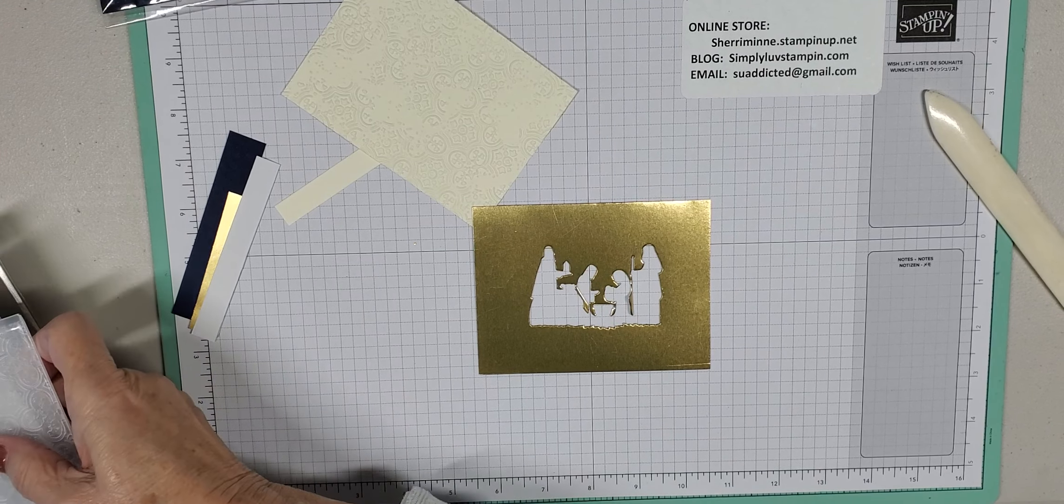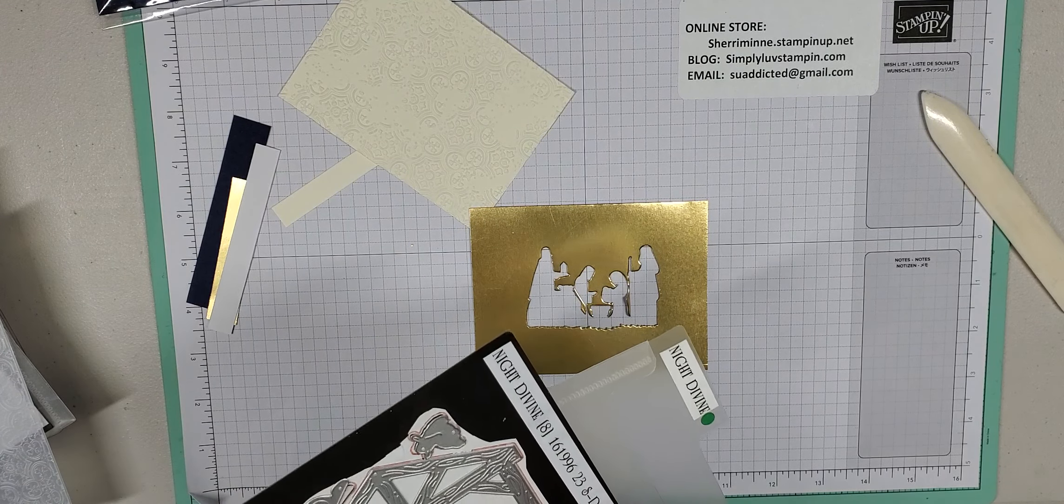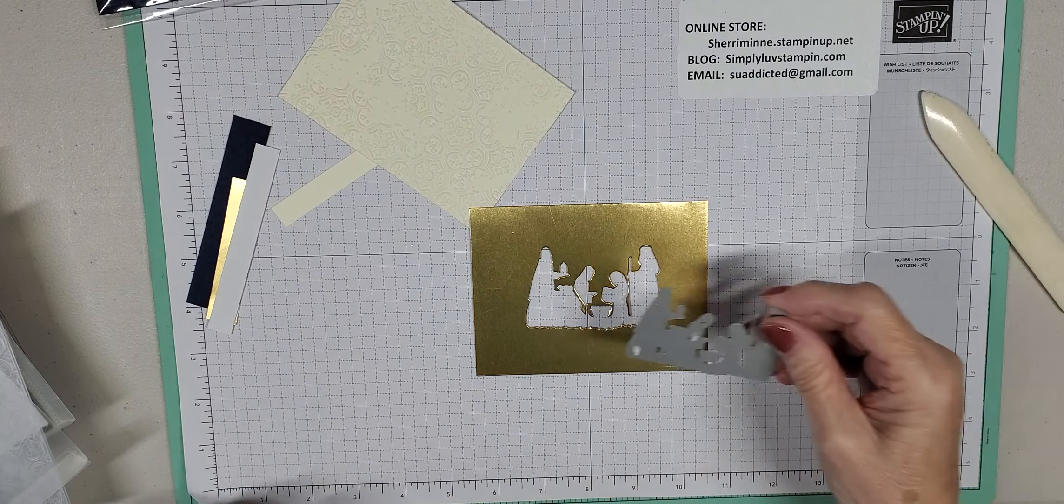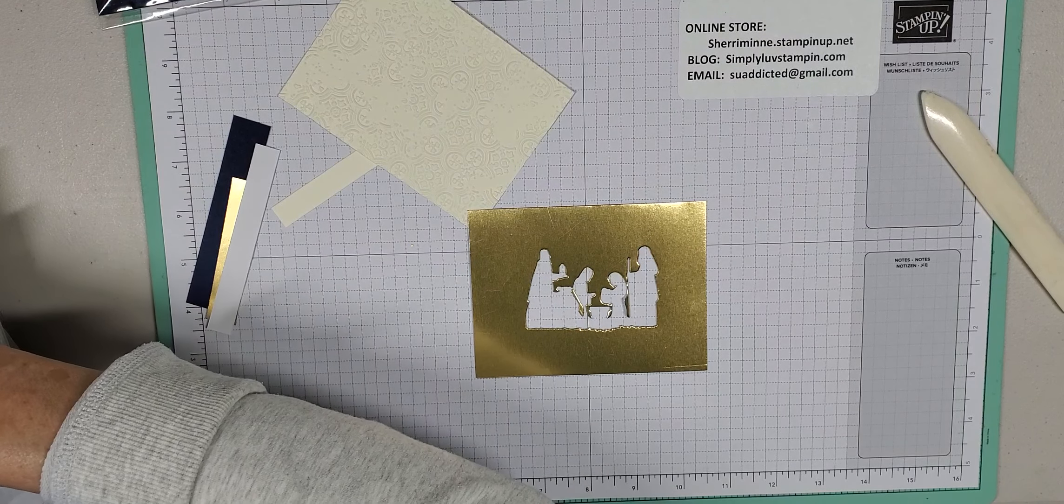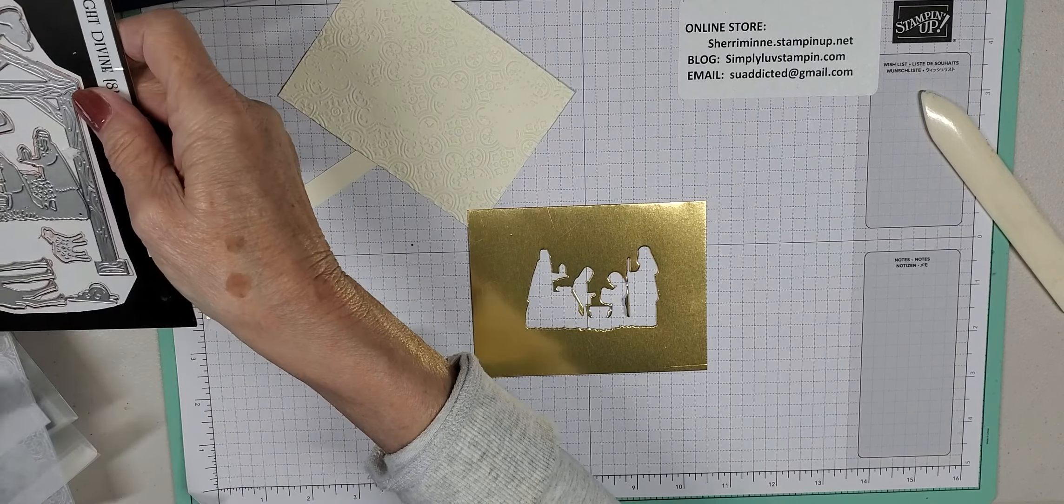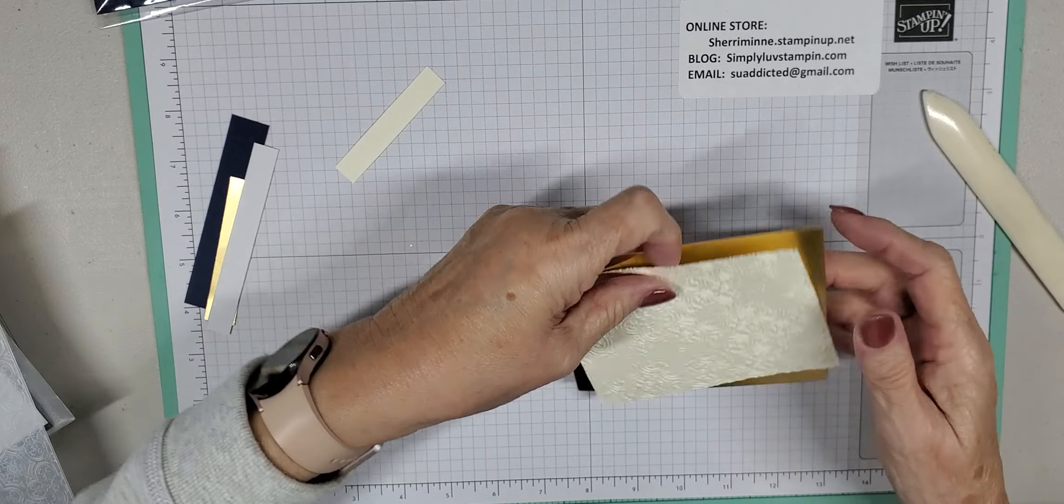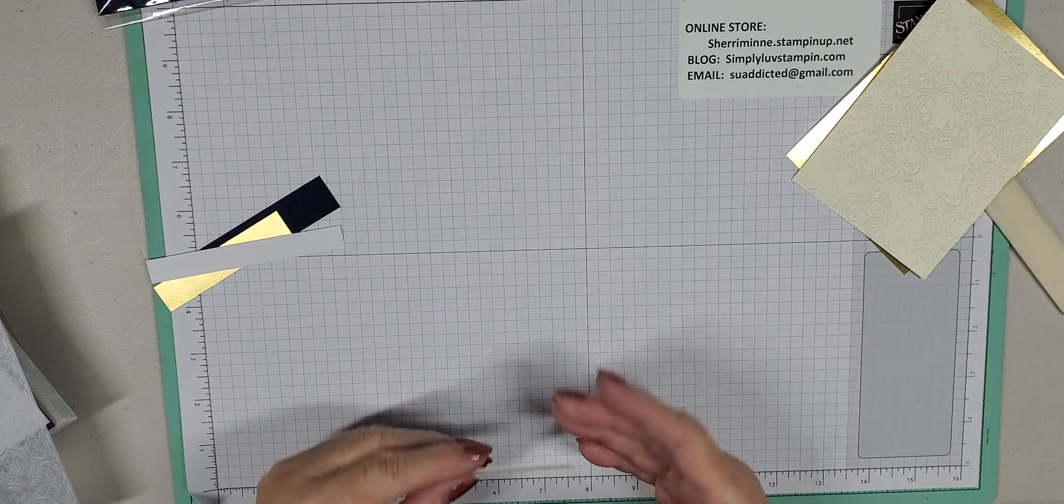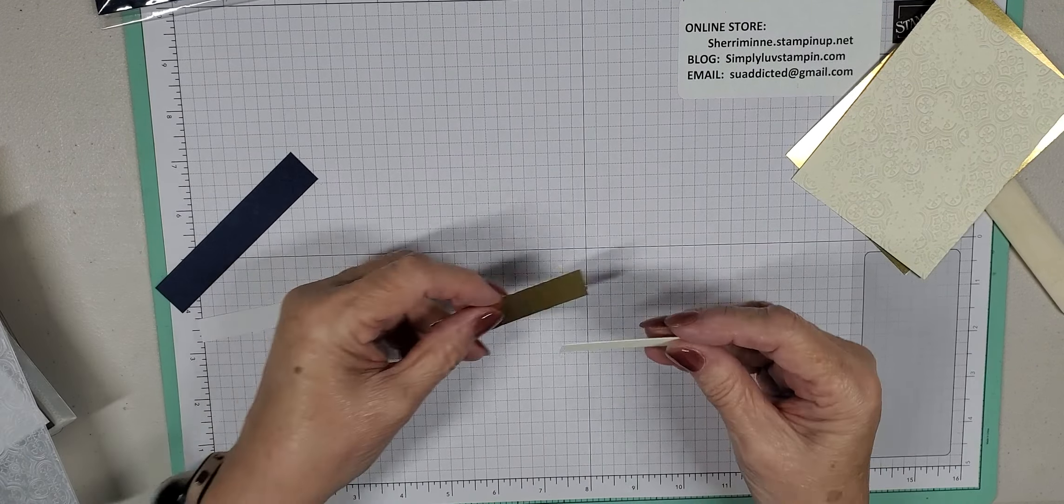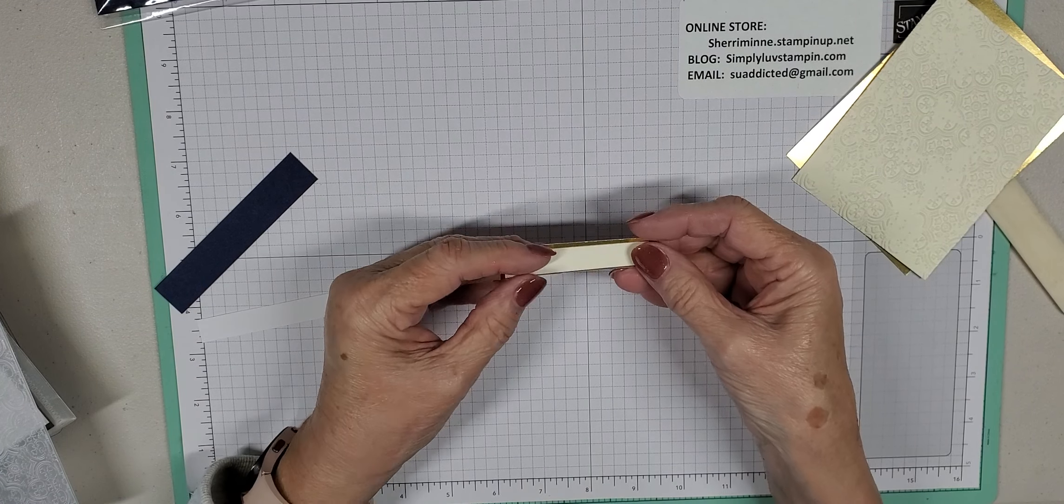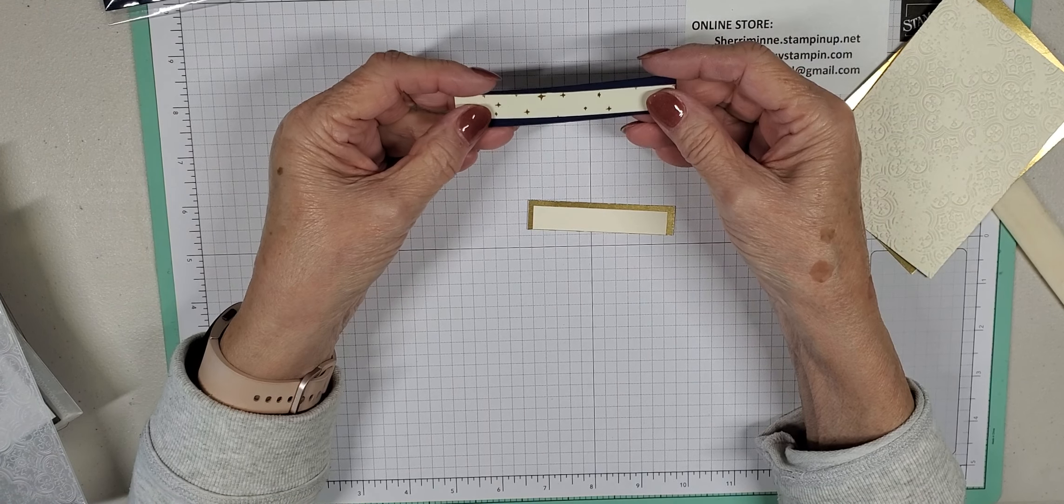I had a piece of gold foil here, 3 5/8 by 4 7/8, and what I did is - it was a solid piece - I took my die from the Night Divine and just laid this in the center to save and conserve my foil paper, and cut it out in the middle. It's going to be covered, nobody's ever going to see it, so it'll work out perfectly fine.